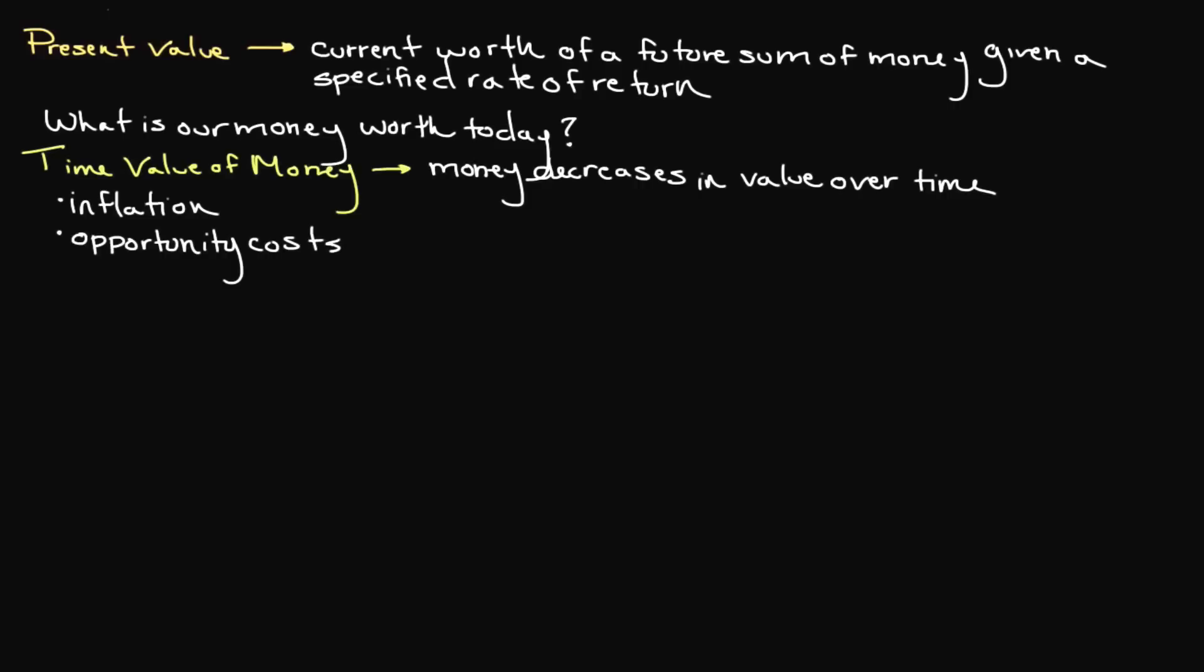Say a friend of ours was offering to pay us $500 two years from now if we were to lend him $450 today. Because of the time value of money, we immediately know that this $500 doesn't hold the value of $500 today. But how much is it actually worth today? To see if we're getting a fair deal, we need to solve for the present value.